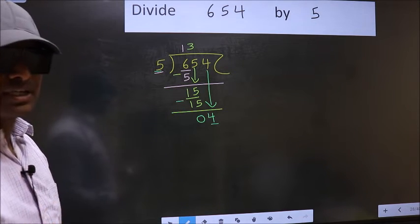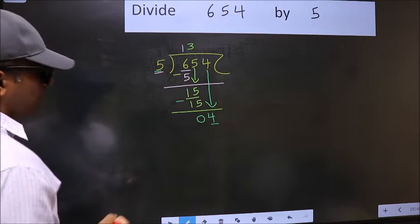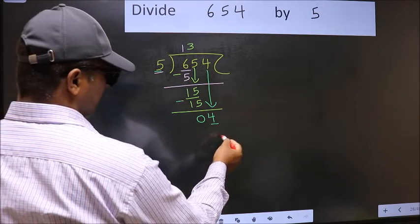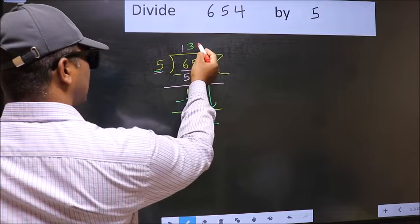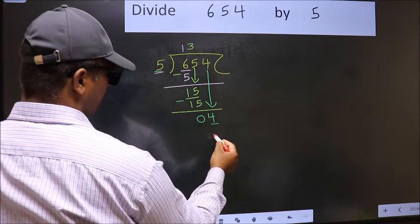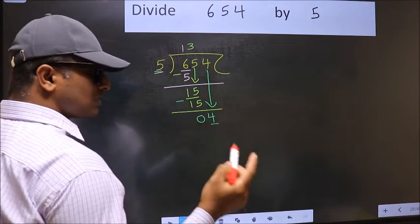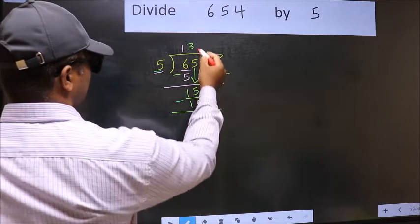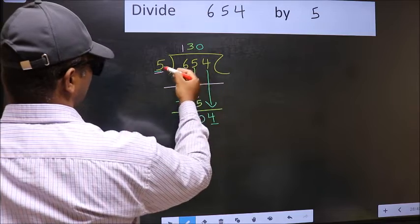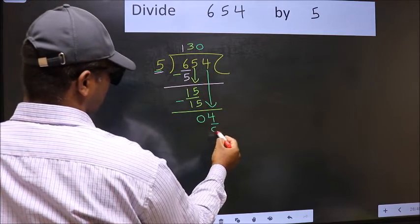Instead, what you should think of doing is, what number should we write here? If I take 1 here, we will get 5. But 5 is larger than 4. So what we should do is we should take 0. So 5 into 0 is 0.